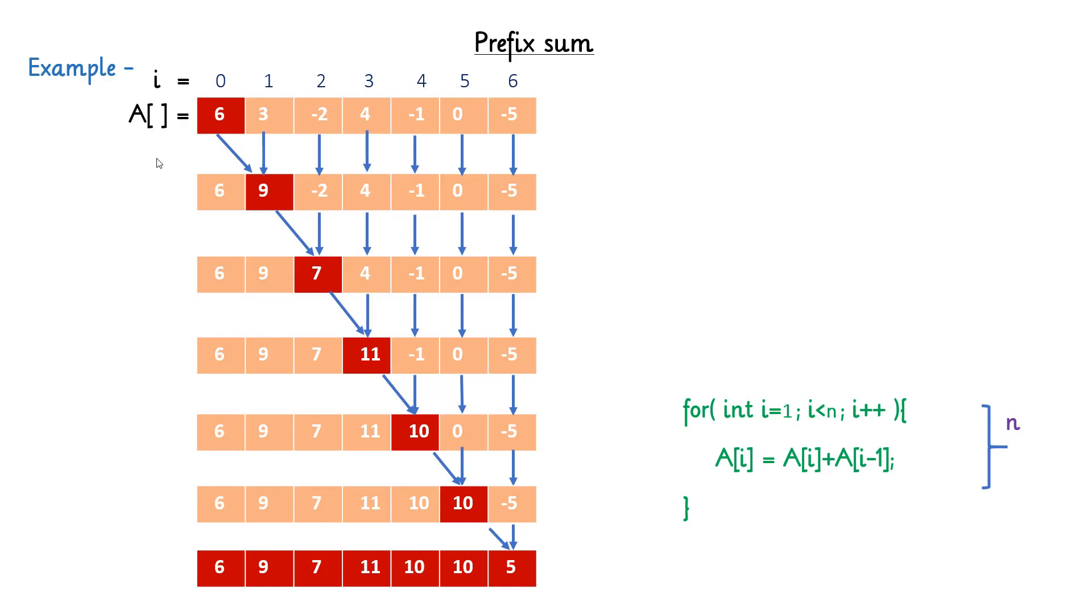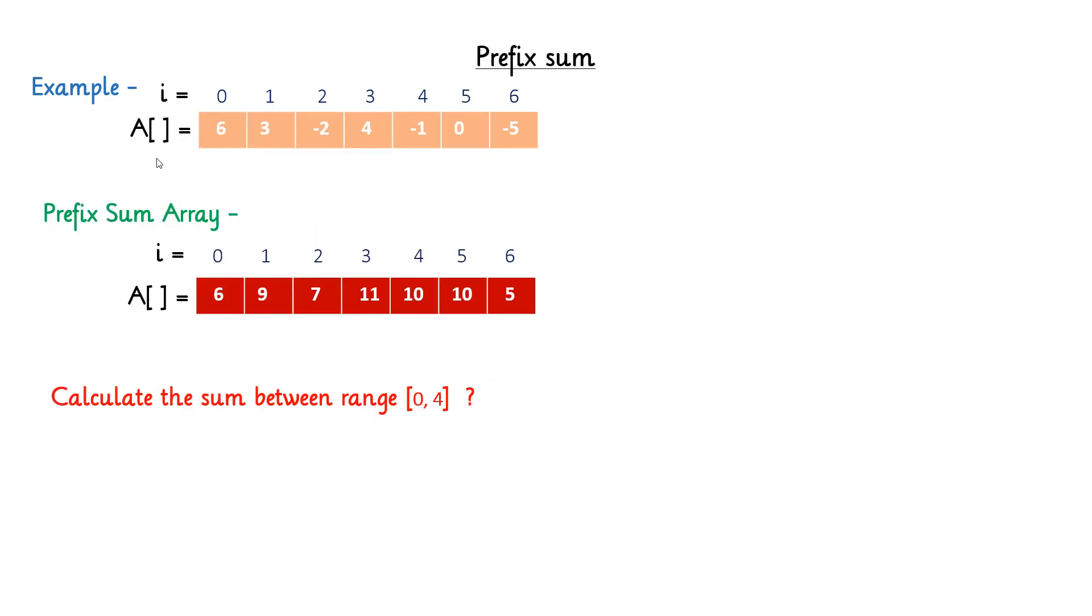So now we know how to calculate prefix array from the input array. Let's try to perform the range query on prefix array and we will see the differences. Can you calculate the sum between range from 0 to 4 now? Yes. You have to just return the array element which is present at index 4, because we have already summed up all the elements from 0 index to 4th index, which takes constant time.